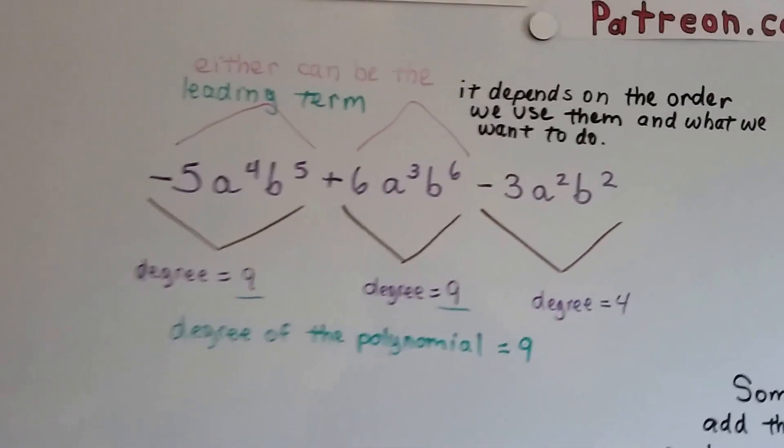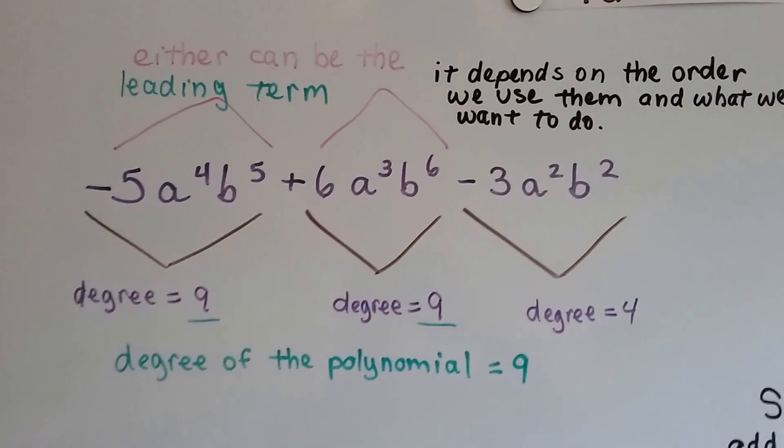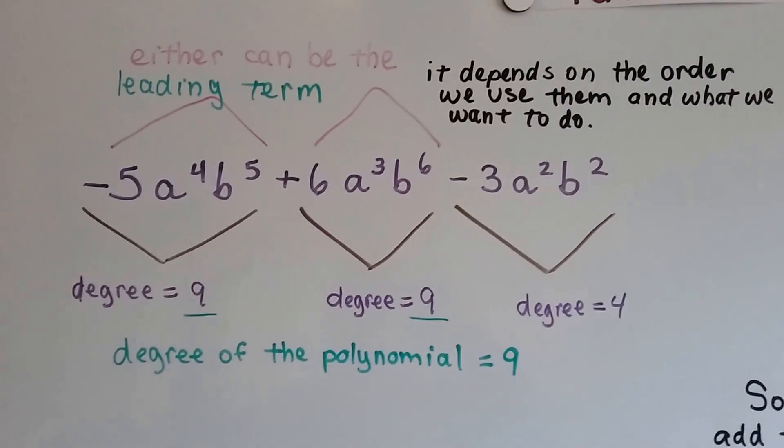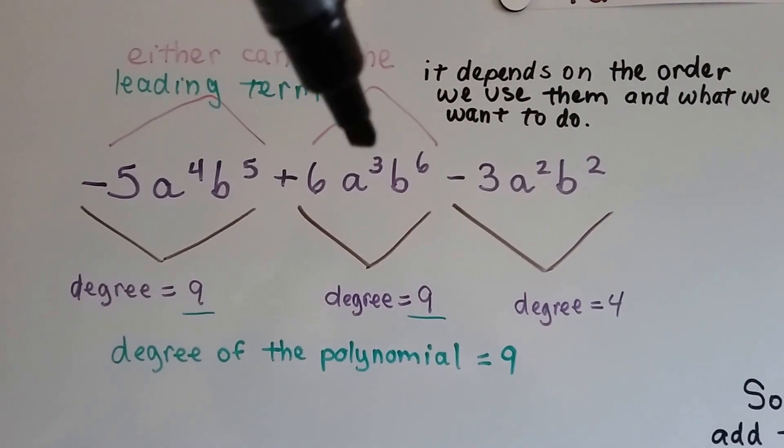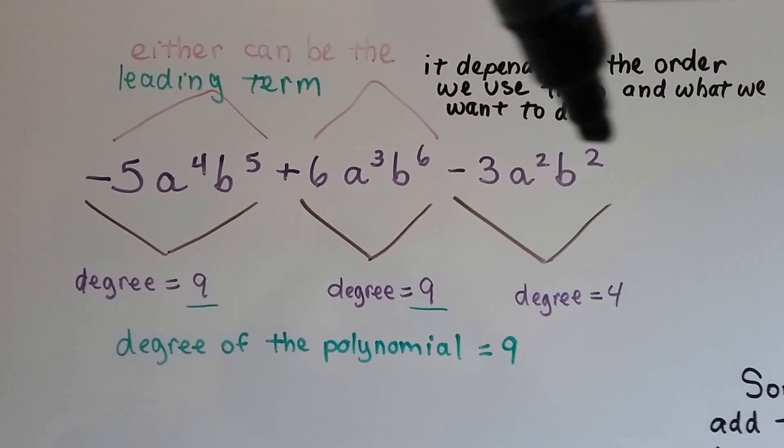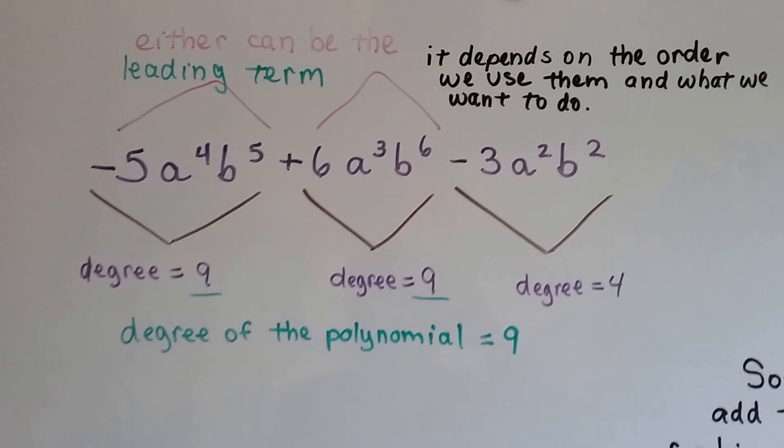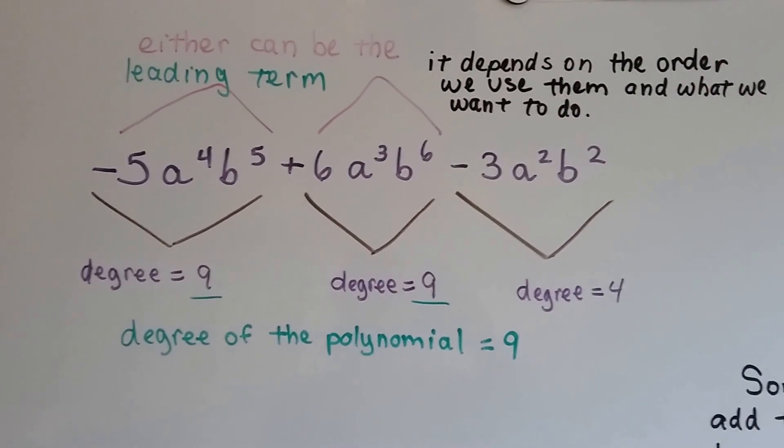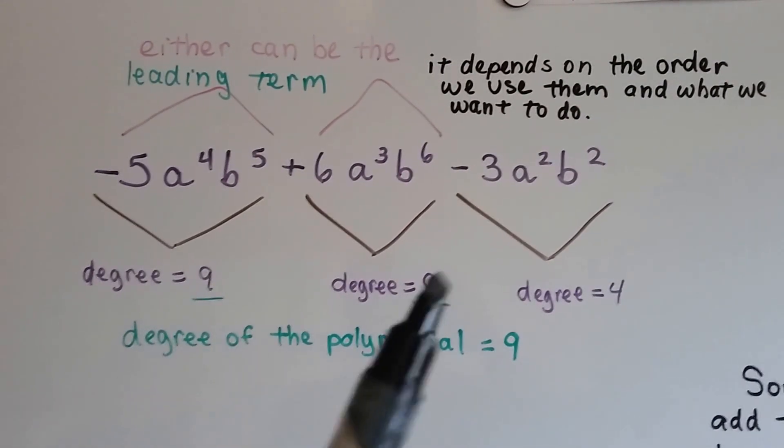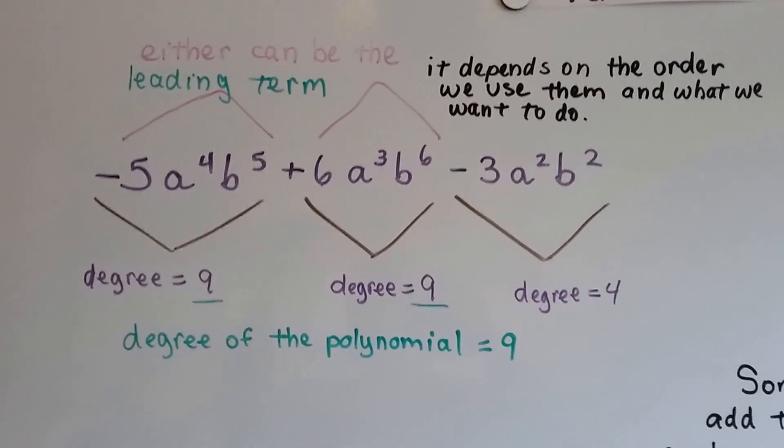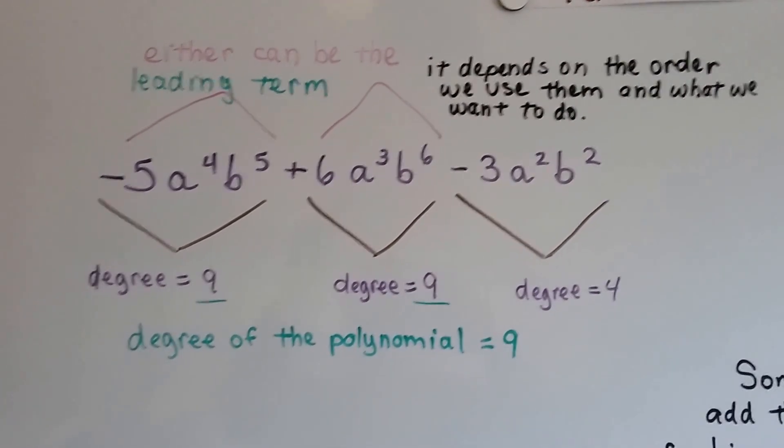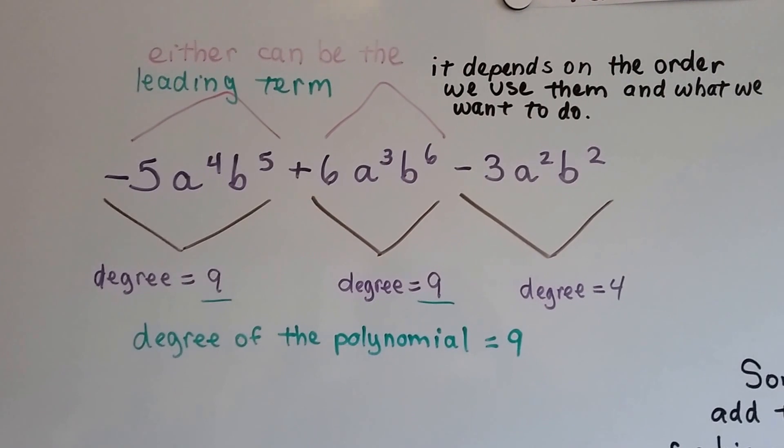What happens when you've got the same degree in two different terms? 4 plus 5 is 9, and 3 plus 6 is 9, and 2 plus 2 is 4. So this has got a degree of 9, 9, and 4. Well, the degree of the entire polynomial is 9. We can pick either one. Either one can be the leading term. It depends on the order we use them and what we want to do.